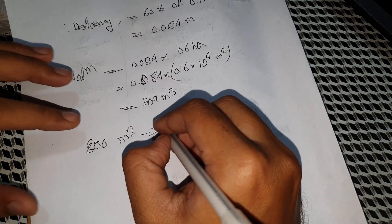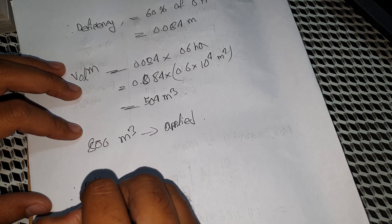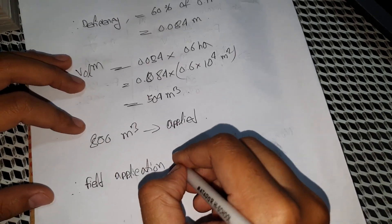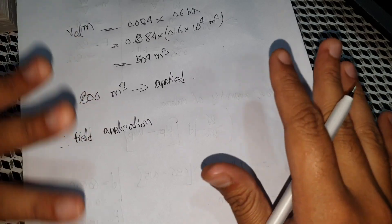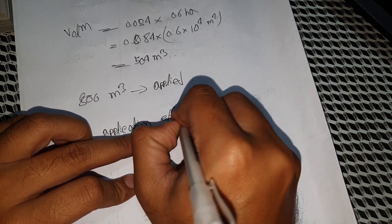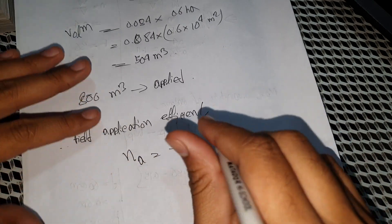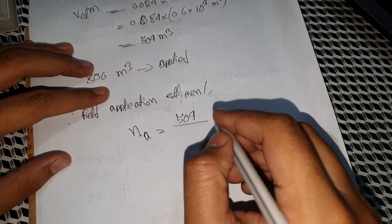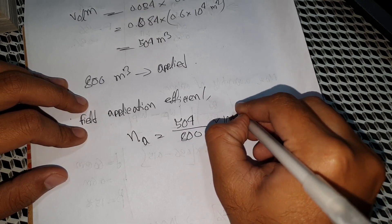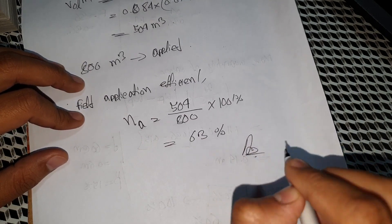We now calculate the field application efficiency. Application efficiency is equal to the total water stored in the root zone divided by the total water applied. We move the total rate to the maximum amount. I'll see you in the next video.